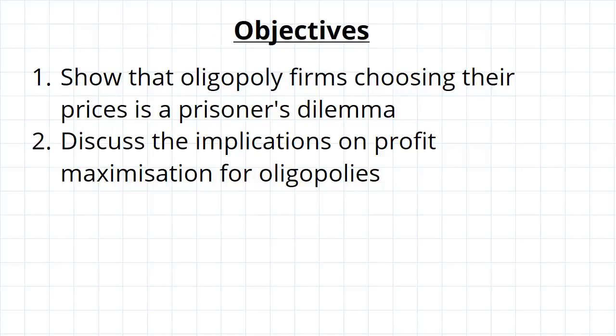G'day guys, in this video we're going to take the concepts we've been looking at so far in game theory and now apply them to what we've looked at in imperfect competition. We're going to show that when you have an oligopoly, the firms choosing what prices they're going to charge ultimately results in a prisoner's dilemma, and we'll discuss what this actually means for oligopolies maximizing their profits.